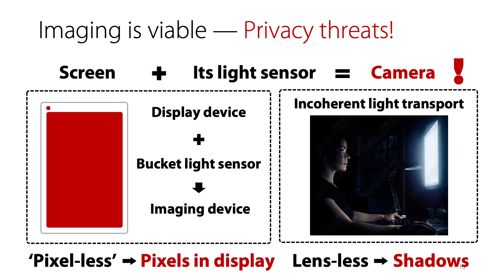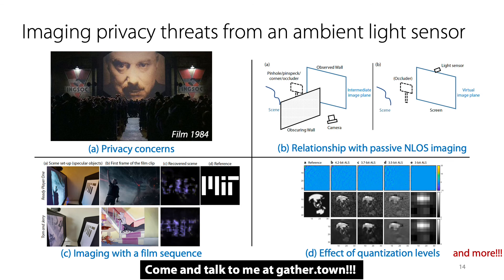In summary, we show that imaging is viable with the screen and its embedded ambient light sensor in both scenarios. This imposes privacy concerns because the ambient light sensor is always on and its data can be easily accessed without any permission. Thank you for your attention. I'm more than happy to talk more about technical details, privacy concerns, and other found extensions at the gather channel.